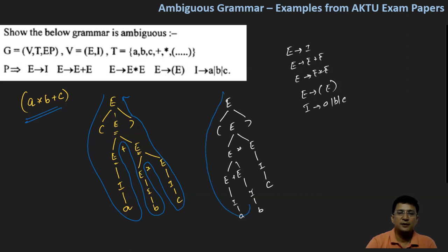Opening bracket, then A, then plus sign, then B, then multiplication sign, then C, then closing bracket. So this is giving you the same string.